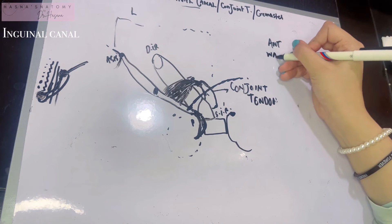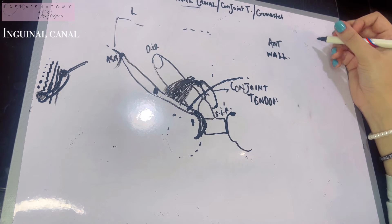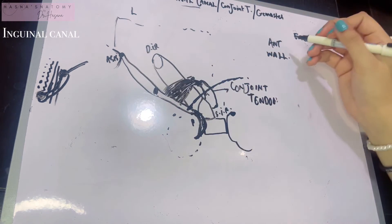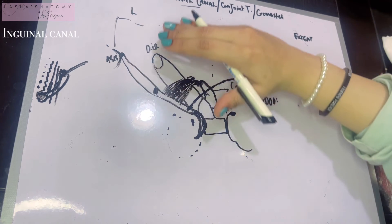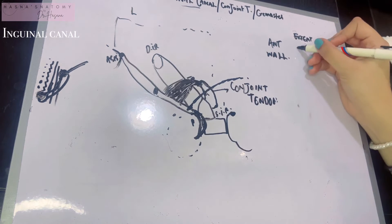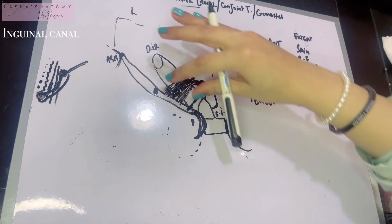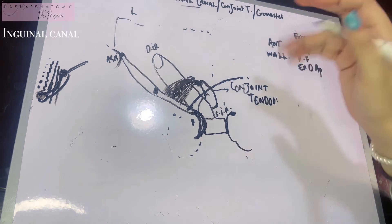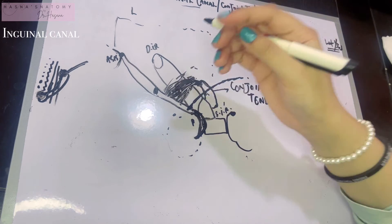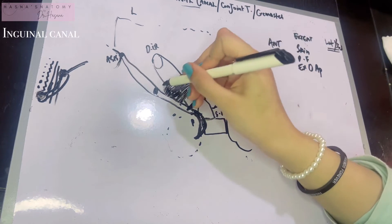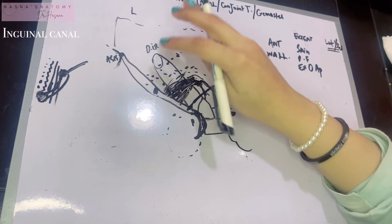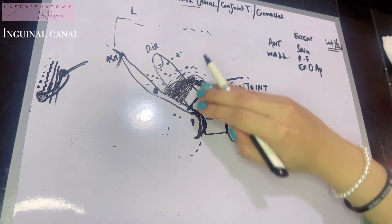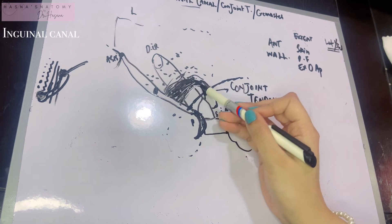The anterior wall of the inguinal canal is formed throughout its whole extent by the skin, the superficial fascia, and the external oblique aponeurosis. However, in the lateral third there is a difference — there are additional structures: internal oblique fibers. These internal oblique fibers are present in the anterior wall of the lateral part of the inguinal canal only, because those fibers end right there.